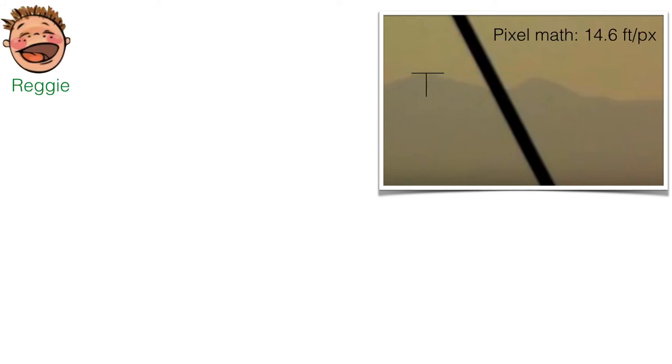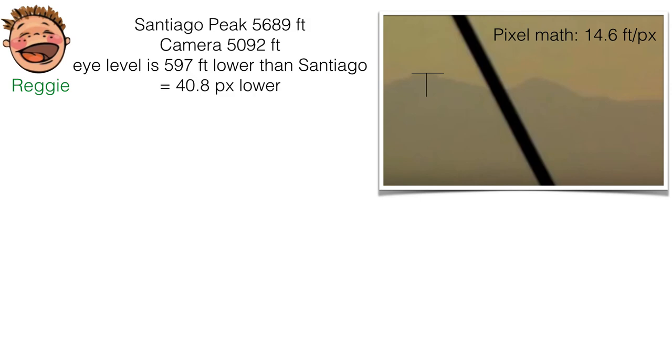Now let's take the three gentlemen and let's do pixel math with their estimates. So Reggie says that because the earth is flat, eye level will be exactly 597 feet lower than the peak. Well, how does that translate into pixels? It's 40, 40 pixels, about 41 pixels. So that's where Reggie says eye level will be.